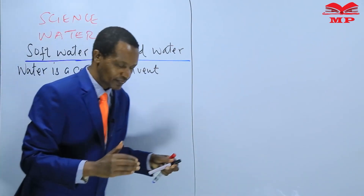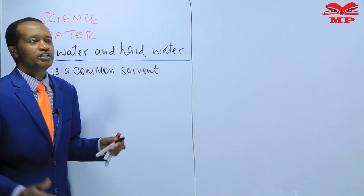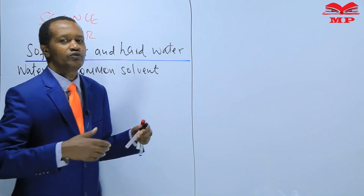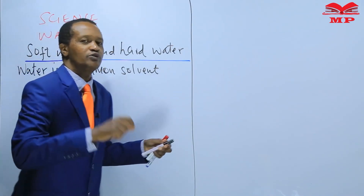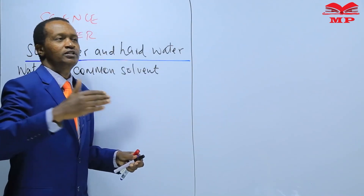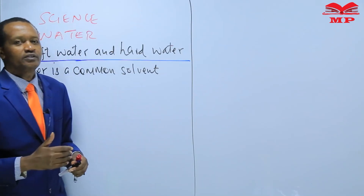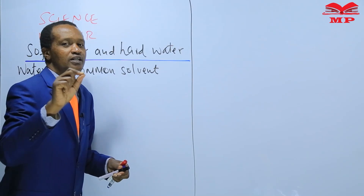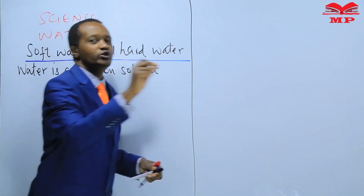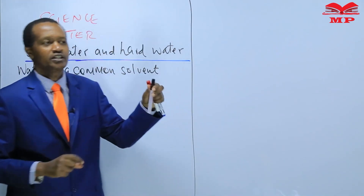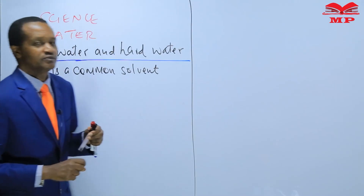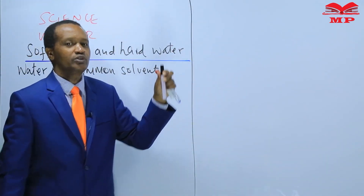Water is a common solvent which is used in our homes to carry out various tasks, such as washing our clothes. It can be obtained from various sources such as rivers, wells, boreholes, lakes, ponds, and rainfall. Water can also be obtained from the ocean — for example, here in Kenya you have access to the Indian Ocean.